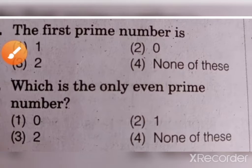Next question. The first prime number is options 1, 0, 2, none of this. First prime number is 2. Then which is the only even prime number? This question is the answer. 0, 1, 2, none of the above. 2 is the answer.